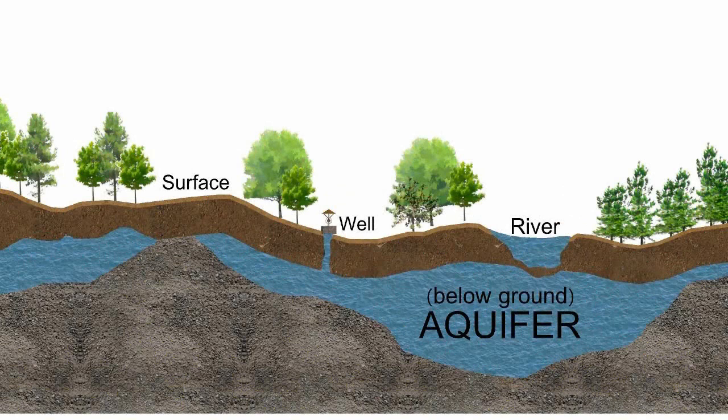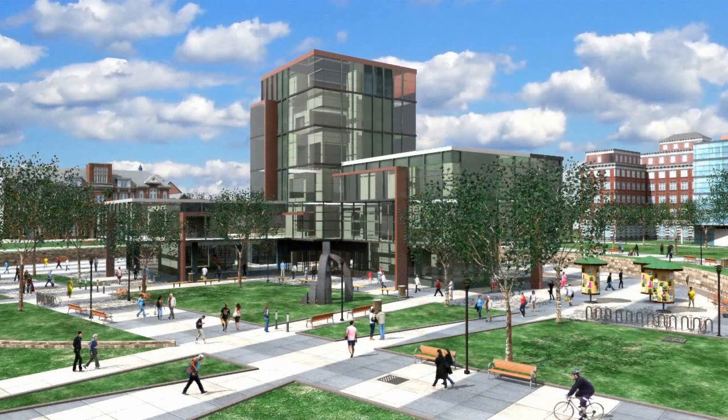Landscape architects design ways to divert and collect rainwater to prevent damage and replenish the aquifer. An aquifer is a below-ground natural reservoir of water that we use for drinking, cooking, bathing, and irrigation.